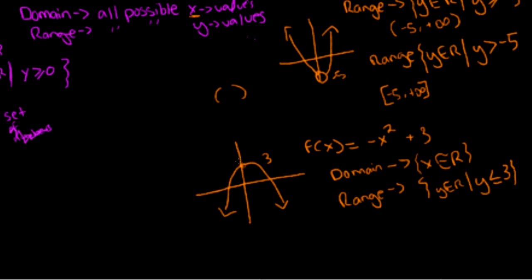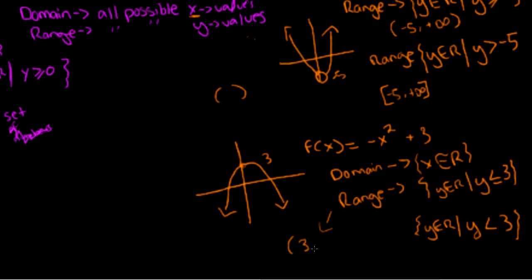Now if you had a hole at that vertex, the range would be y is all real numbers such that y is less than 3, because when there's a hole the function cannot equal the value where that hole is. We can write this range in interval notation as from 3 to negative infinity.